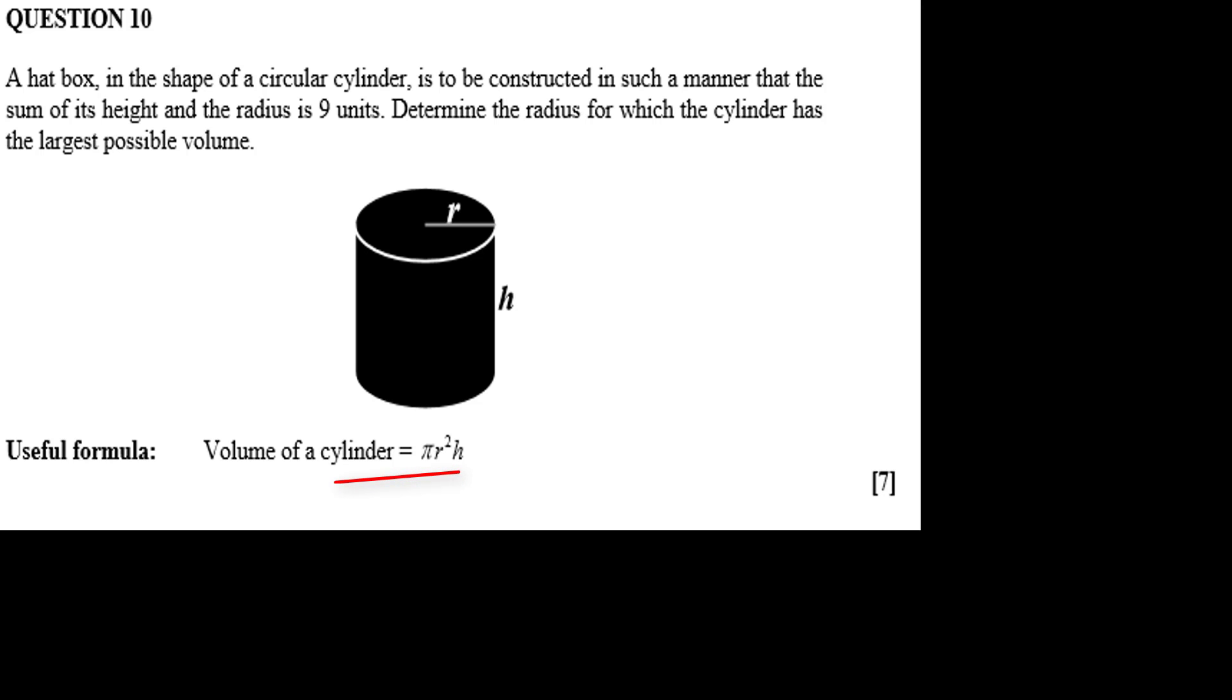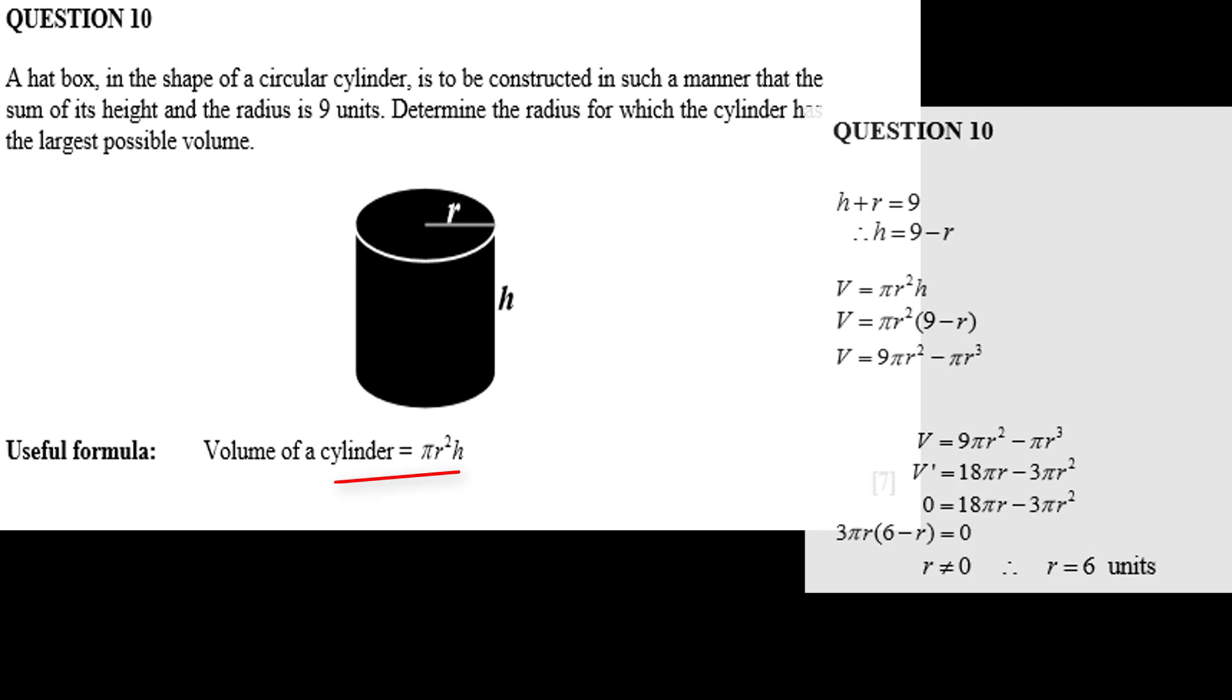We're given that v equals pi r squared times h and that h plus r equals 9 or h equals 9 minus r. Make that equation 1.